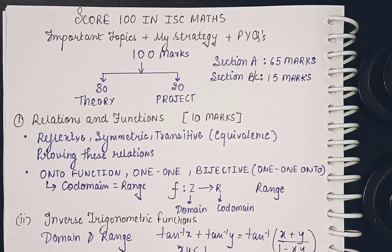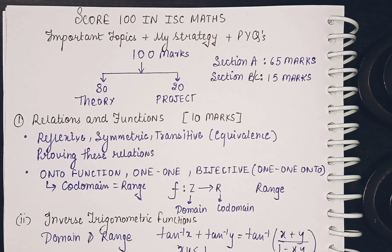If I talk about the format of the paper, it is for 100 marks, out of which 80 marks is your theory and 20 marks is for your project work. Talking about Section A, it is for 65 marks, and Section B or Section C, whichever you attempt, is for 15 marks.